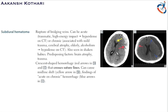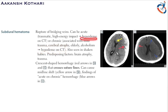Chronic subdural hematoma can be due to mild trauma, cerebral atrophy, aging, or alcoholism, and presents as hypodensity on CT scan. Remember: acute subdural hematoma is hyperdense, chronic is hypodense. Subdural hematoma has a classic association with shaken baby syndrome — infants exposed to even mild trauma can present with subdural hematoma.